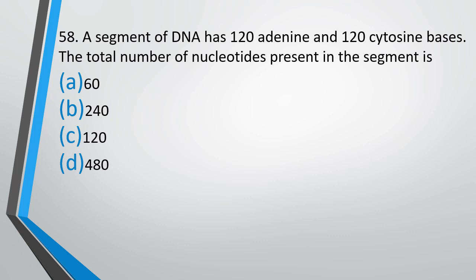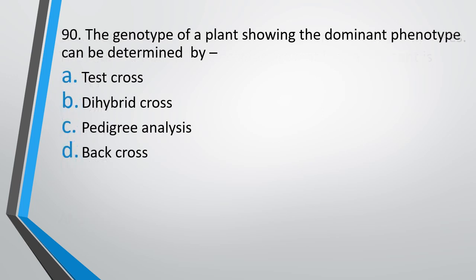Question number 58. A segment of DNA has 120 adenine and 120 cytosine bases. The total number of nucleotides present in the segment is: 60, 240, 120, or 480. The correct answer is option D — 480. Question number 90. The genotype of a plant showing dominant phenotype can be determined by: test cross, dihybrid cross, pedigree analysis, or back cross. The correct answer is option A — test cross.